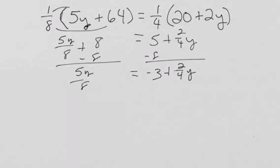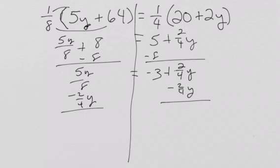All right, so now, I want to subtract my two-fourths y from both sides. And remember, you're just subtracting fractions. It's all you're doing. So, when you subtract fractions, we have to have a common denominator. Two-fourths will become four-eighths.